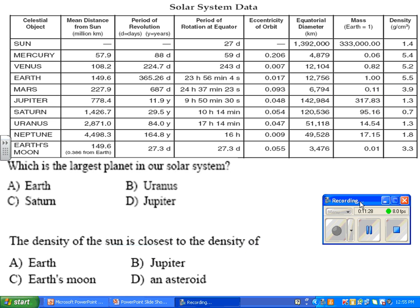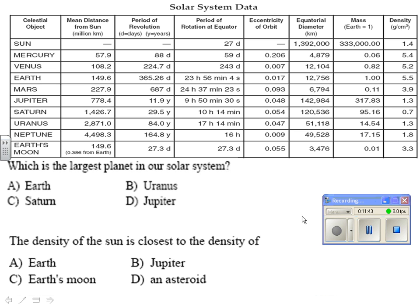The last two questions: which planet is the largest in our solar system? You can look at either the equatorial diameter or the mass — the largest planet is Jupiter. And the final question: the density of the Sun is closest to the density of which planet? The Sun has a density of about 1.4 g/cm³. Scrolling through the choices, the closest match is Jupiter.